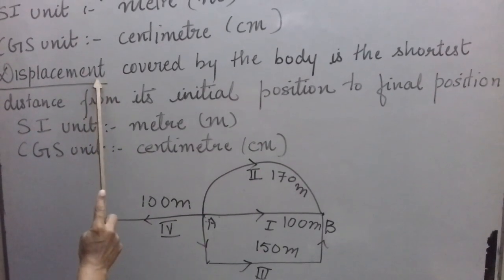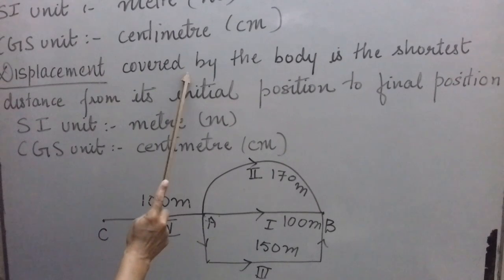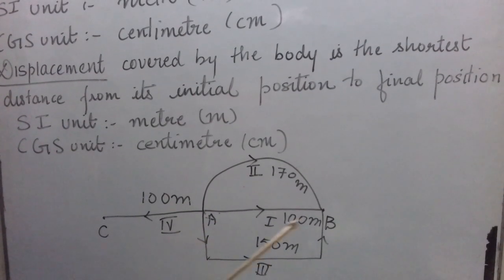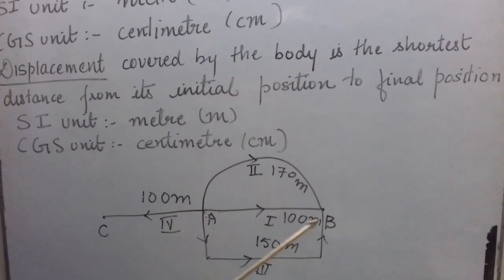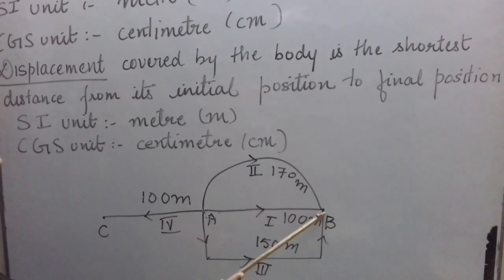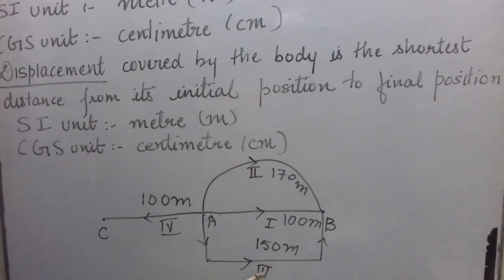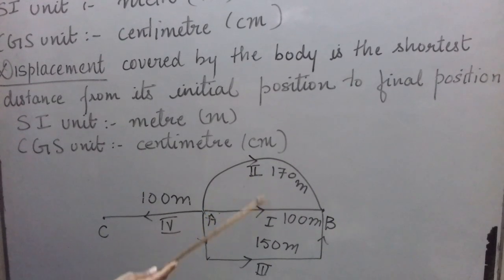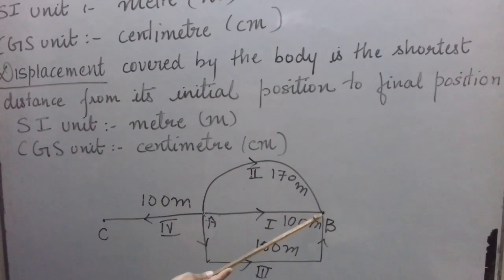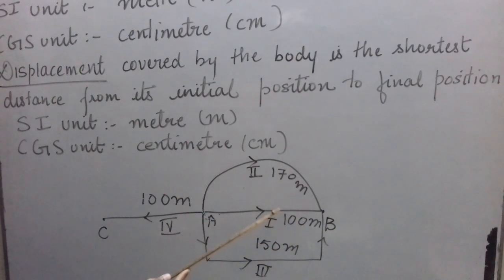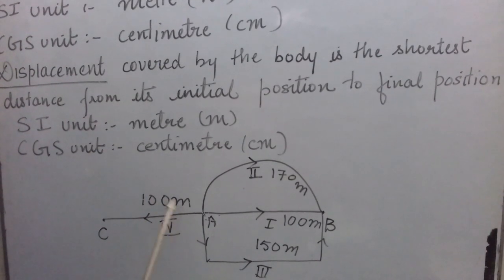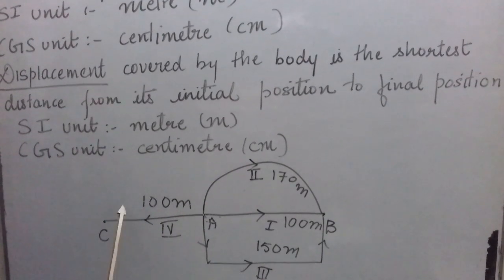Now if I ask what is the displacement covered by each of them — displacement is the shortest distance from initial position to final position. For the three persons whose initial and final positions are both A and B, the shortest distance is the straight-line path. So although they travelled different distances, the displacement for all three is the same: 100 meters from A towards B. For the fourth person, the distance travelled is 100 meters and displacement is also 100 meters, but from A towards C.